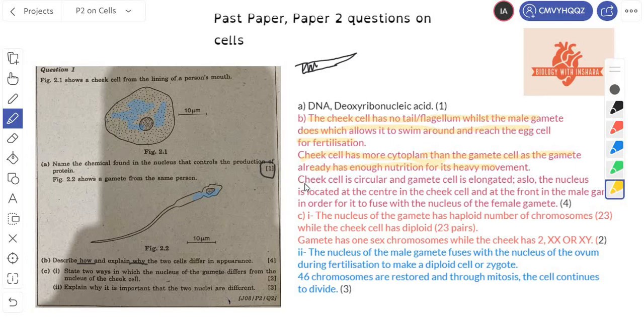The cytoplasm contains sugar, ions and stuff from which you get energy, nutrition. Your nutrients are there dissolved in your cytoplasm. And the male gamete already has enough nutrition, that's why it only has a small amount of cytoplasm. But if you want to know why, how it has enough nutrition, it basically contains a lot of mitochondria which produces energy for the cell for its heavy movement. The very obvious one: the cheek cell is circular and the male gamete is elongated. Why? The elongatedness of the male gamete allows it to swim around faster. Also, the nucleus is located at the center in the cheek cell. Yes, you can see that this here is the nucleus at the very center. And the nucleus of this male gamete is at the front. Here you go, this is the center nucleus. At the front. This is the difference in the male gamete.